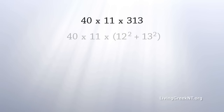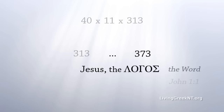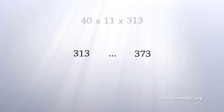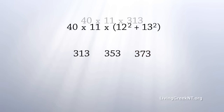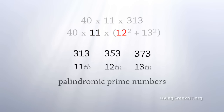With that in mind, we examine the prime number 313. A prime number is a whole number divisible by itself and by one only. 313 starts a sequence that leads to the prime number 373. Why is 373 significant? Jesus is called the Logos — the Word — and the numeric value of Logos is 373. The sequence is 313, 353, and 373, and these are the 11th, 12th, and 13th palindromic prime numbers — 11, 12, 13.